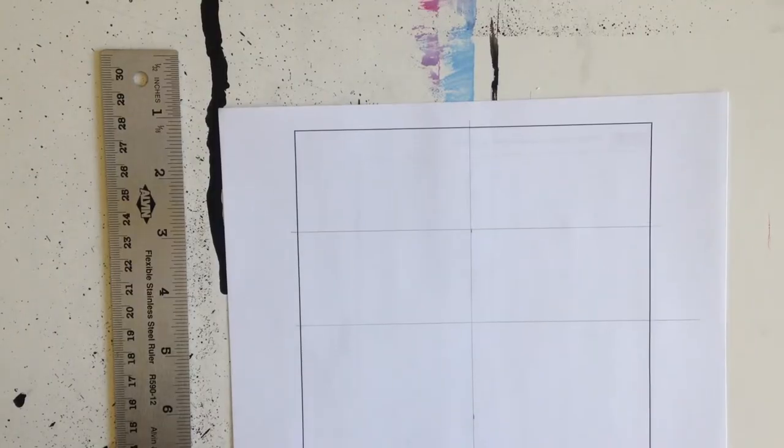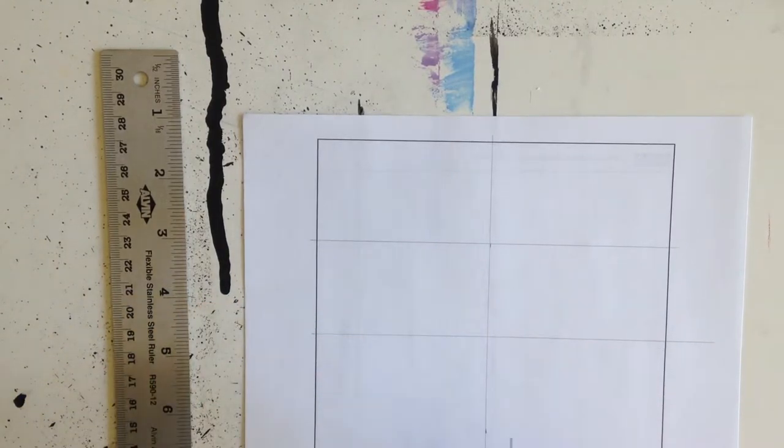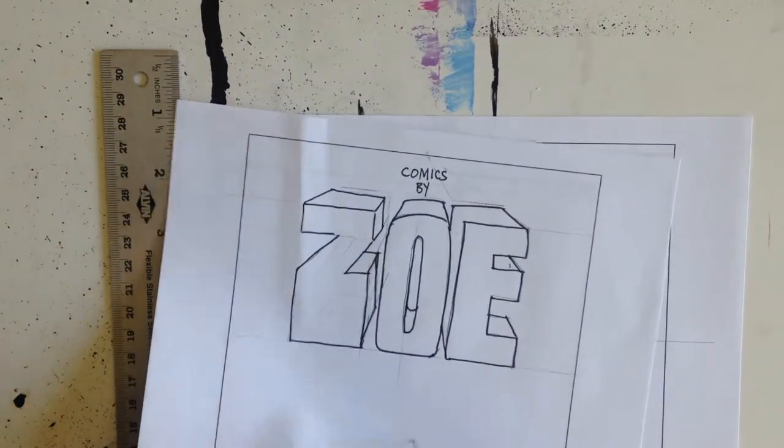For a name with even numbered letters, you're going to put a letter on either side. For the odd number one, we put that O in the center.